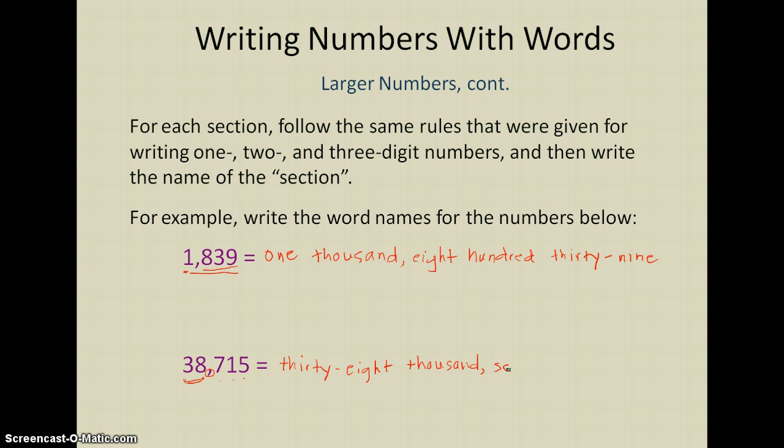So I have 38,000, comma just like in the number, and then I have 700 and 15. And 15 is just written with one word so I don't need a hyphen there. So that's how I would write out the word name for that big number: 38,000, comma, 715.